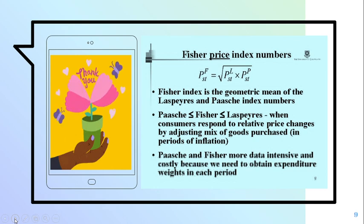When consumers respond to price relative changes by adjusting mix of goods purchased in periods of inflation, Paasche and Fischer are more data intensive and costly because we need to obtain expenditure weights in each period.